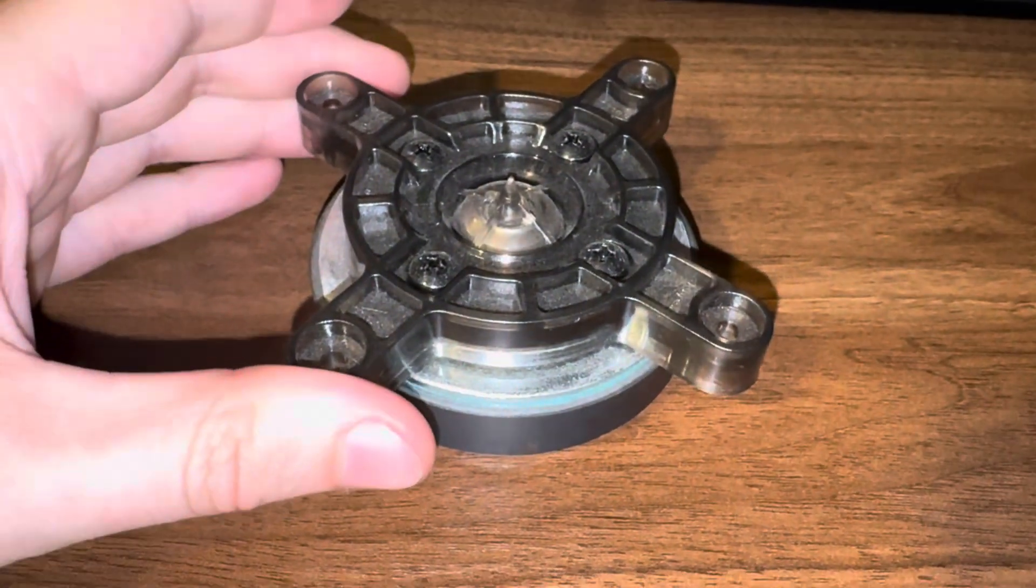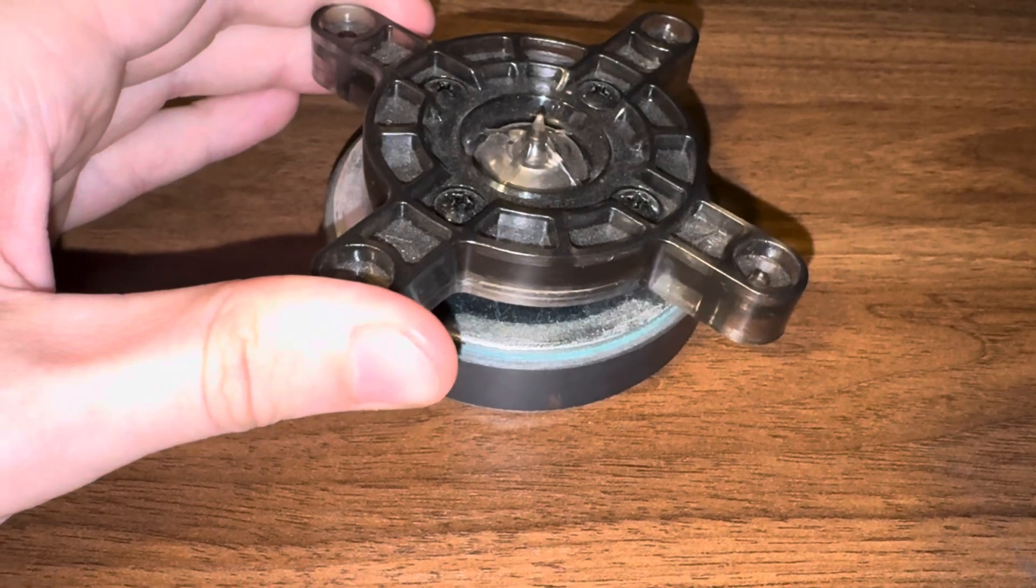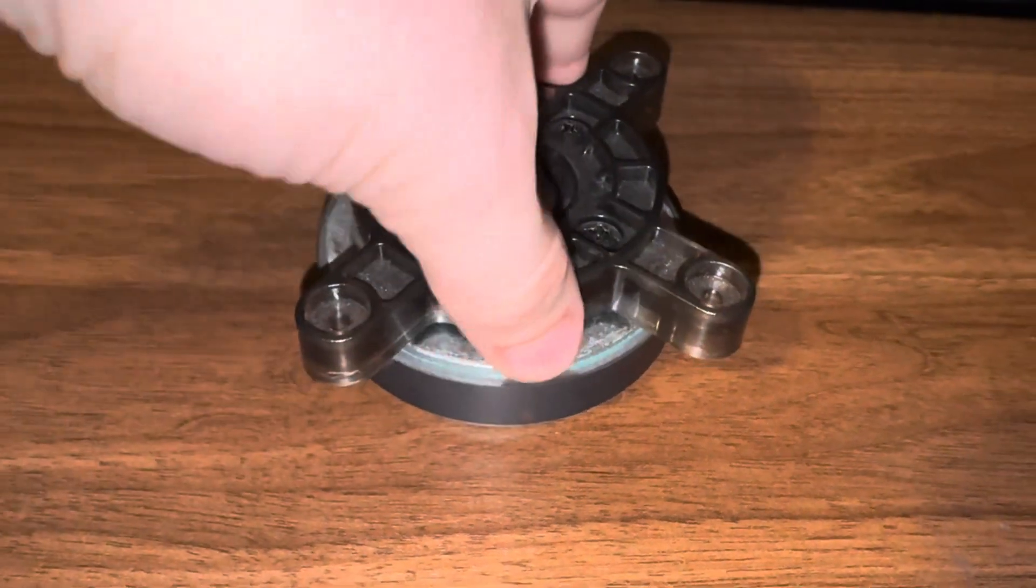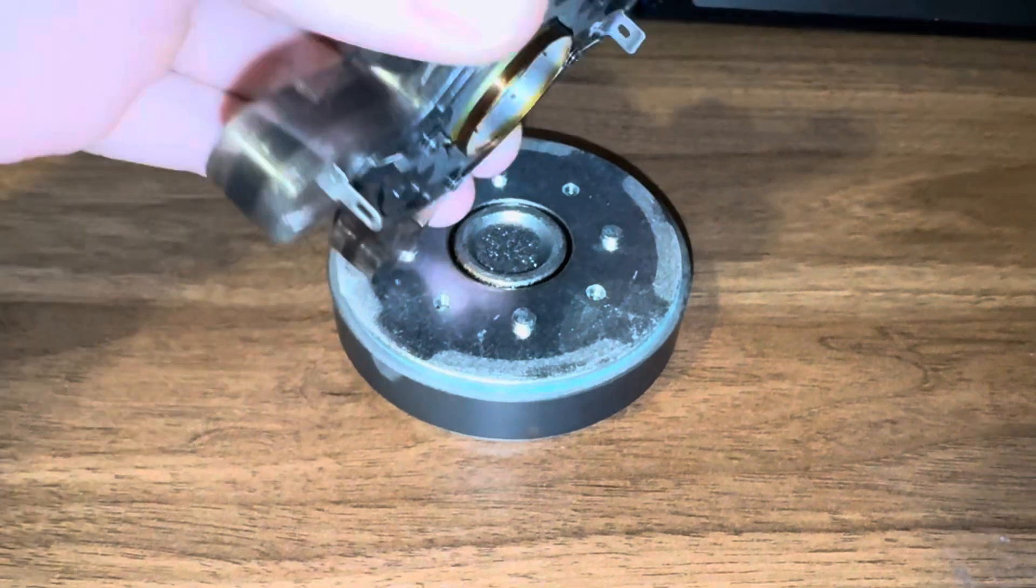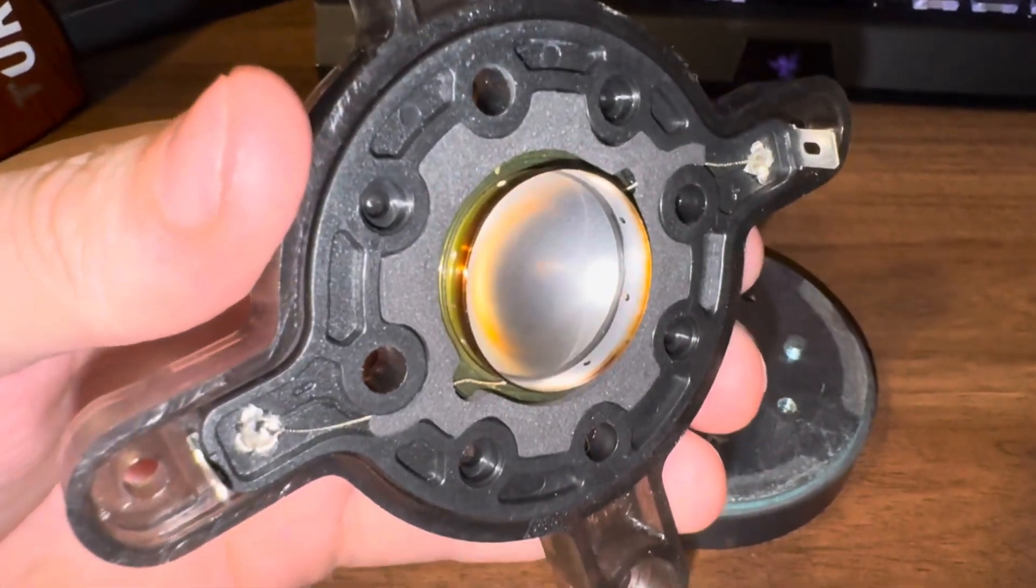But anyway, we'll lift this piece off. The screws are already loose because of the magnet. They kind of stay in place. And there you go. There they go. That's pretty much it. It's a metal dome.